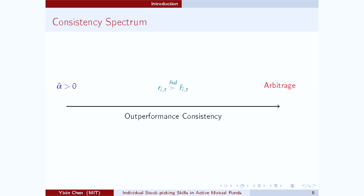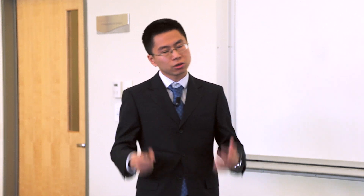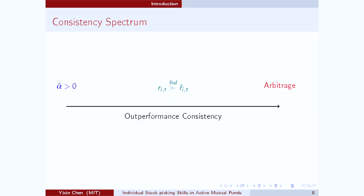Here's the spectrum of out-performance consistency. On one end of this spectrum, we have the conventional positive alpha condition, whereas on the other end, we have the arbitrage condition. Positive alpha states that on average, the investor's performance should be better than the benchmark, whereas arbitrage states that the investor's performance should always be better than the benchmark. Our new first-order stochastic dominance condition sits in the middle of this spectrum. First-order stochastic dominance states that this investor should have a higher probability to realize high returns and a lower probability to realize low returns. Therefore, first-order stochastic dominance is weaker than arbitrage but stronger than the conventional positive alpha condition.